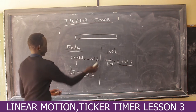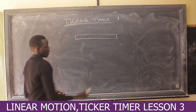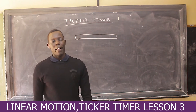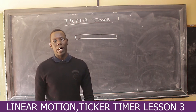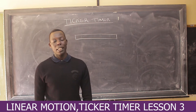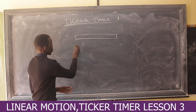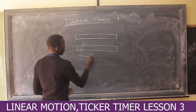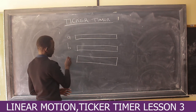Now let's look at the following. I want to draw three tape strips being pulled by a trolley through a ticker timer. From there we can discuss which strip is moving with uniform velocity, which one moves with increasing velocity, and which one moves with decreasing velocity. We'll label them tape A, tape B, and tape C.